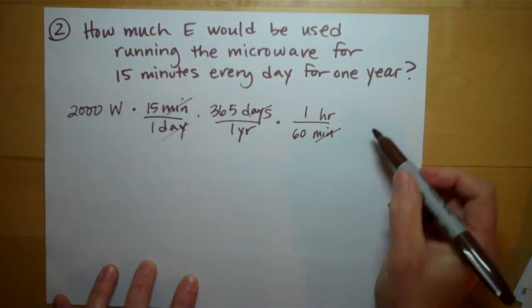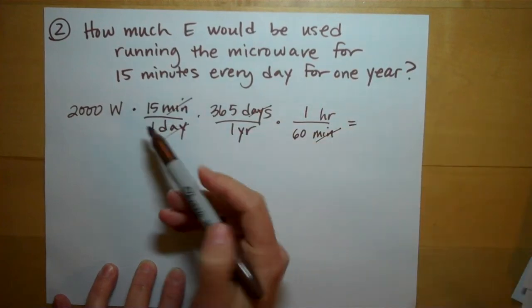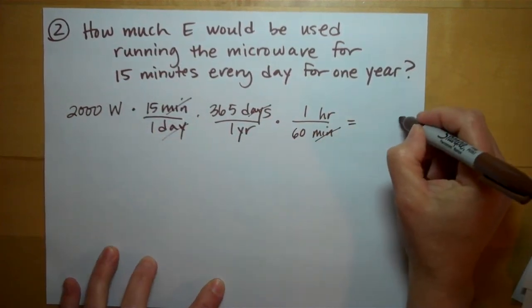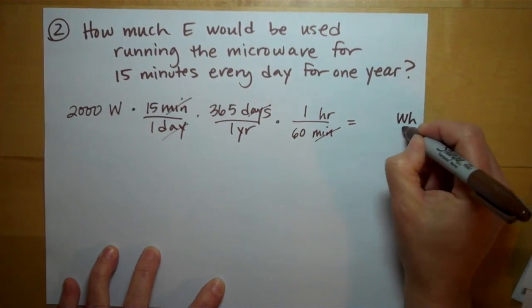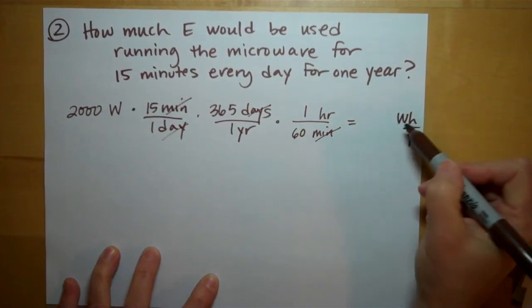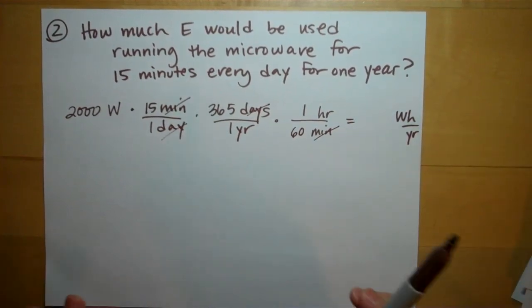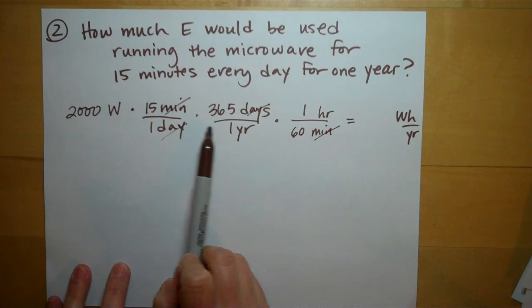So that would get rid of our minutes. And now if we multiply this out, our unit will come out to watt-hours per year, which is what we want. Watt-hours per year. And we could change the decimal to make it into kilowatt-hours per year.